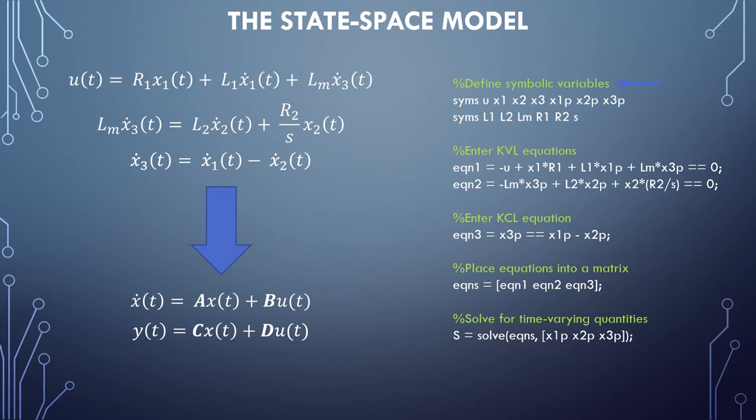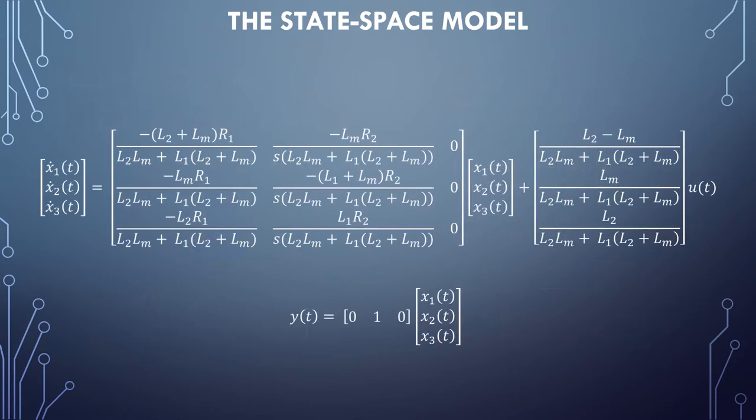This is the MATLAB script that was used to accomplish that goal. First, I define the symbolic variables used in the equations. Then I enter the KVL and KCL equations. Those equations were then grouped together and the solve function was used to solve for each of the three time-varying quantities.